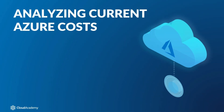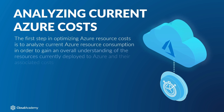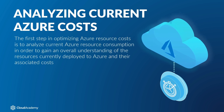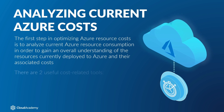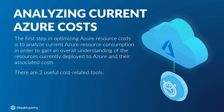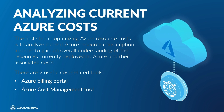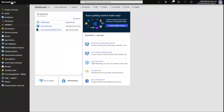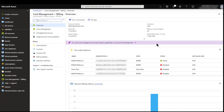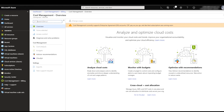In the case where you already have resources deployed to Azure, the first step in optimizing Azure resource costs is to analyze current Azure resource consumption in order to gain an overall understanding of the resources currently deployed to Azure and their associated costs. There are two tools that can be used for determining overall Azure costs: the Azure billing portal and the Azure cost management tool. The Azure billing portal can be accessed from the Azure portal by choosing cost management and billing. The Azure cost management tool is another good tool for monitoring and analyzing Azure costs, and can also be accessed from the cost management and billing blade.